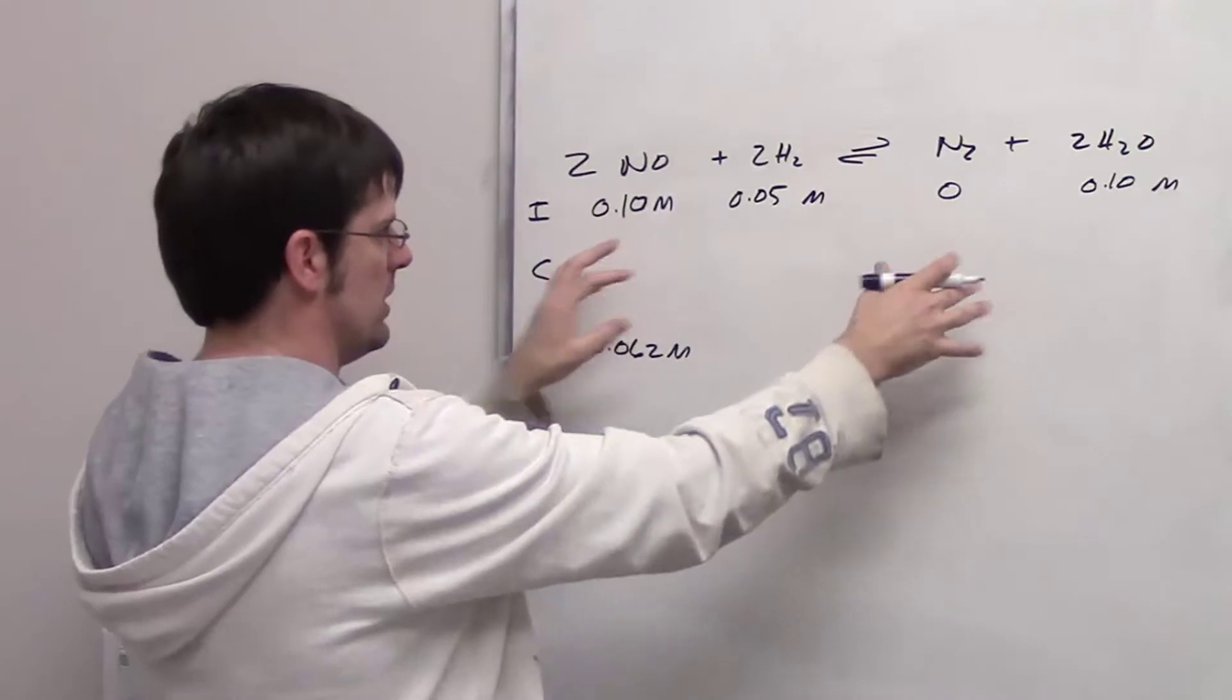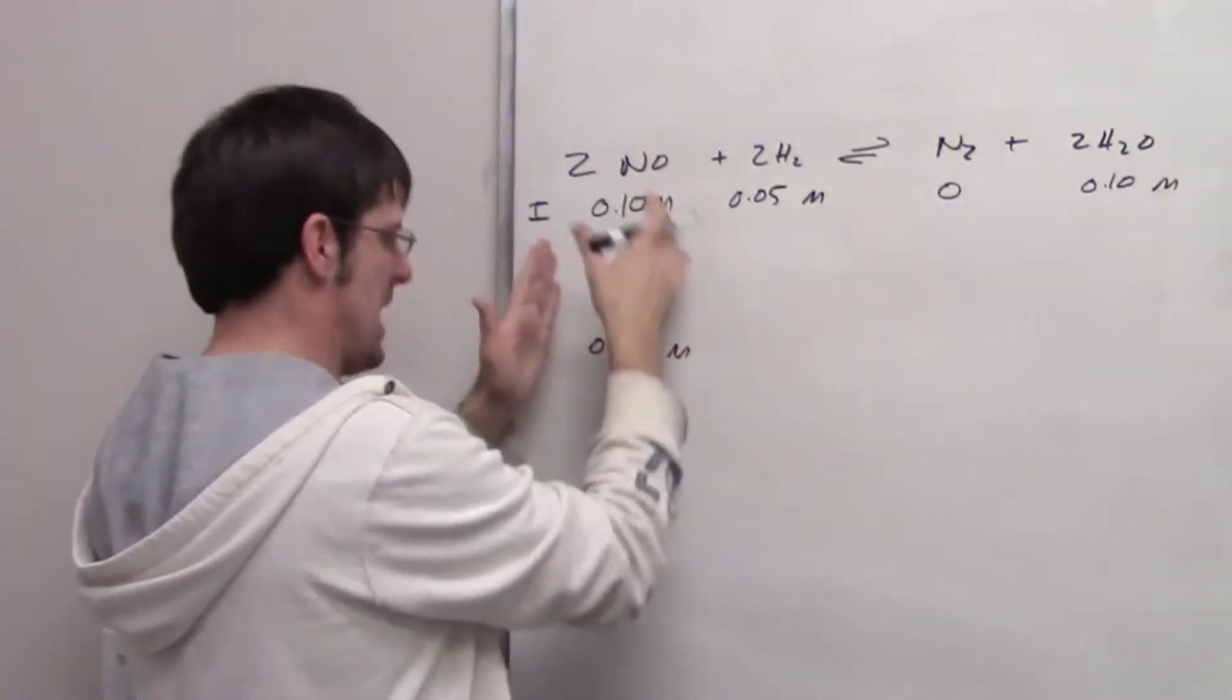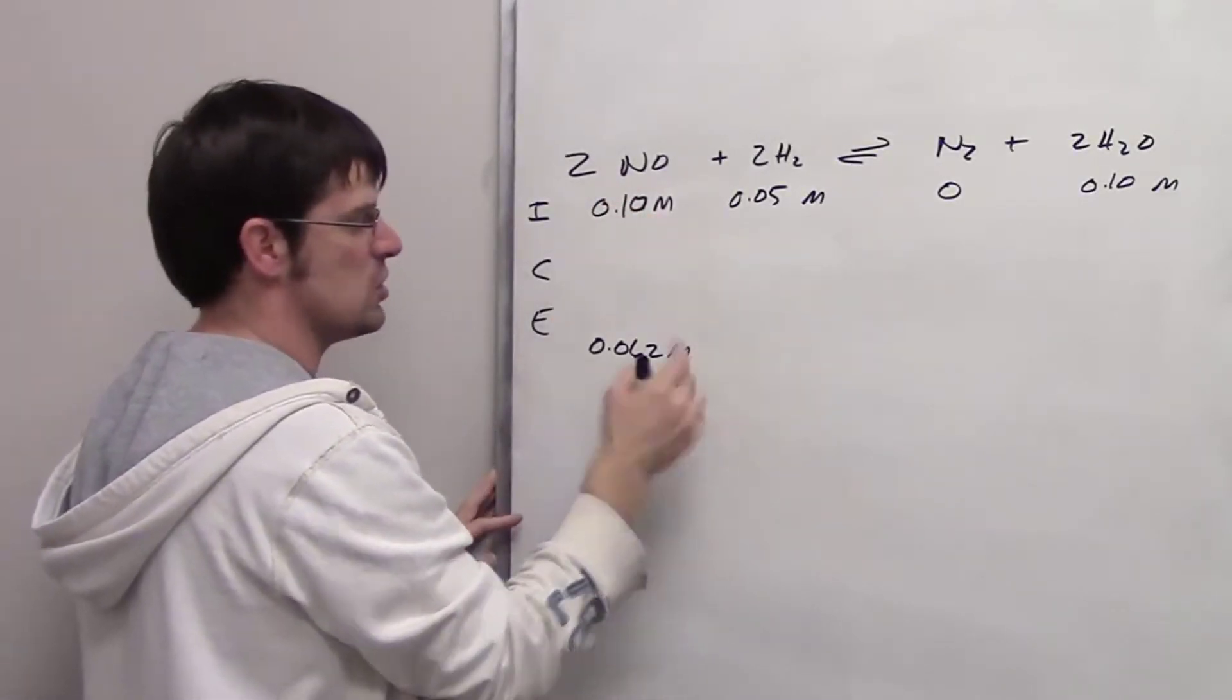Now some changes undergo as this goes back and forth in order to reach equilibrium. Then once it does reach equilibrium, I've got a concentration of NO of 0.062 molar.